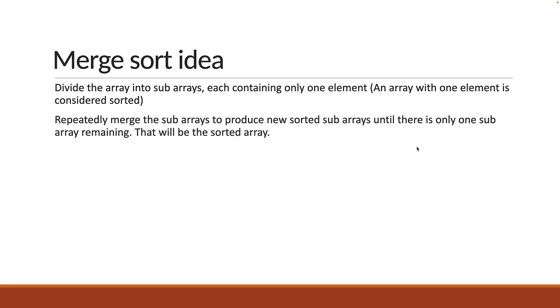Let's now understand the idea behind merge sort. First you divide the array into sub-arrays, each containing only one element. An array with one element is considered sorted. For step 2, you repeatedly merge the sub-arrays to produce new sorted sub-arrays until there is only one sub-array remaining which will be the sorted array.